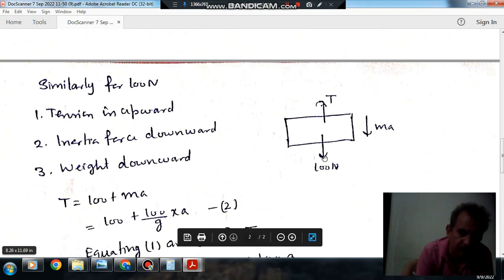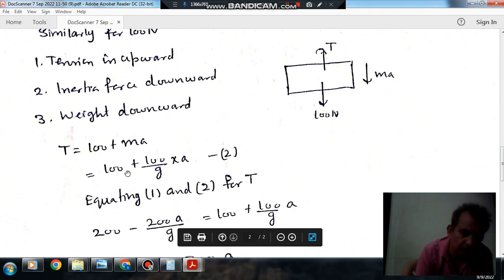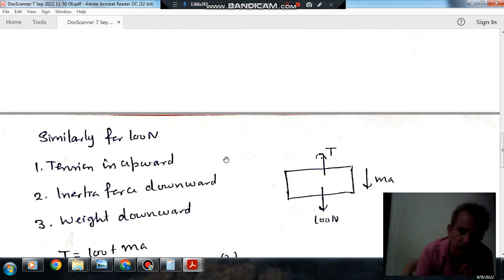T equals 100 plus MA for the second block. T equals 100 plus 100 by G, because M is weight by G, 100 by G into A. This is equation number 2. Now this is equation 1 and this is equation 2.